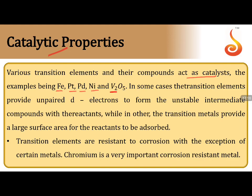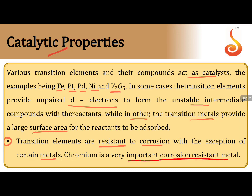Catalytic properties: various transition elements and their compounds act as catalysts — examples include iron, platinum, palladium, nickel, and V₂O₅ in industrial processes. In some cases, transition metals provide unpaired electrons to form unstable intermediates; in other cases, they provide large surface area for adsorption of gases, speeding up reactions. Transition metals are generally resistant to corrosion, though iron (rusting), copper (corrosion), and silver (tarnishing) are exceptions.